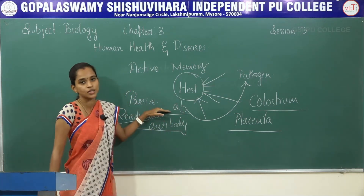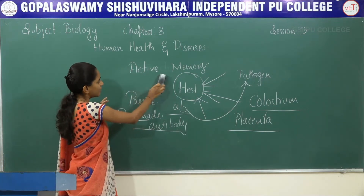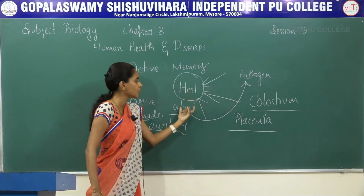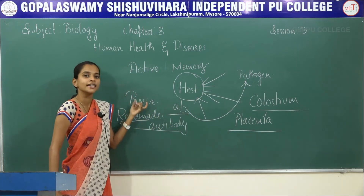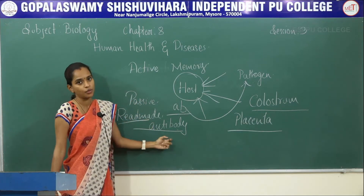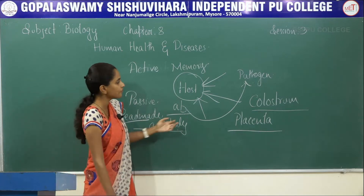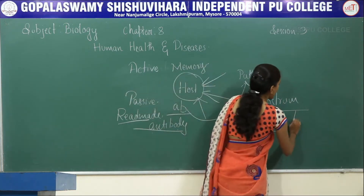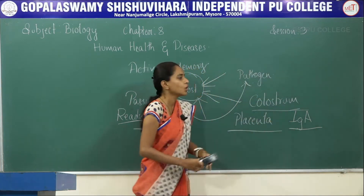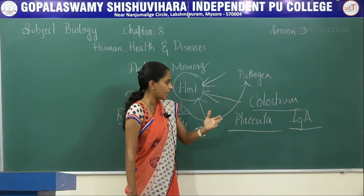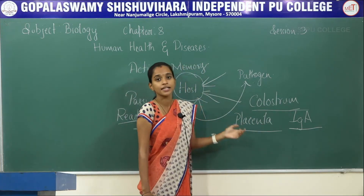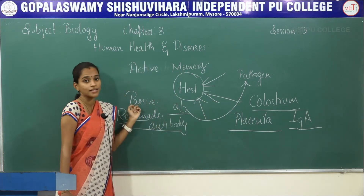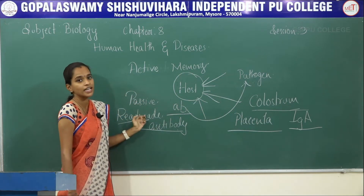Colostrum and placental transfer are examples of passive immunity. In active immunity we make the host get exposed to pathogens to produce antibodies, whereas in passive immunity we directly transfer ready-made antibodies. Naturally this occurs via colostrum — the mother's breast milk rich in IgA immunoglobulin — which is transferred into the child, or through the placenta when the child is in the womb.